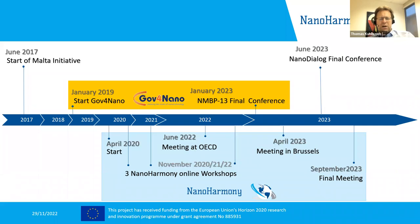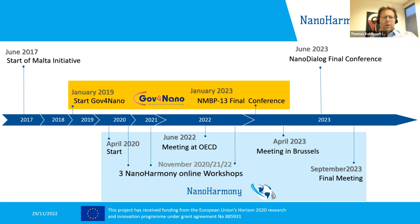With this third workshop, we are one year before the final of NanoHarmony, which concludes in September 2023. We have the chance here to introduce our ideas for the last year of NanoHarmony and start a discussion on what will come as a legacy afterward. This third NanoHarmony online workshop started online because we had no possibility for a face-to-face meeting in 2020.